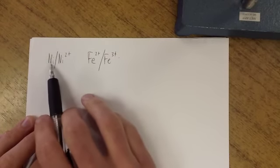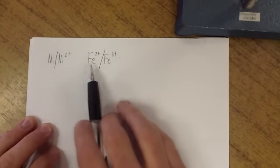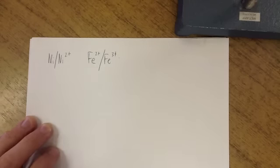What I've given you, what I'm doing is saying there's two half cells, a nickel, a nickel ion, Fe2+ to Fe3+ half cell.